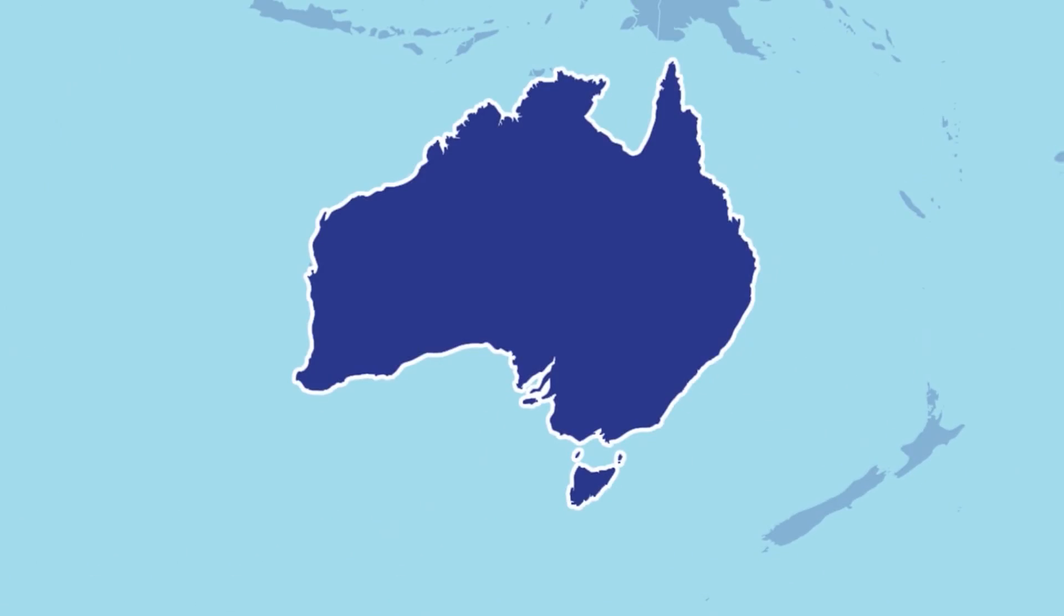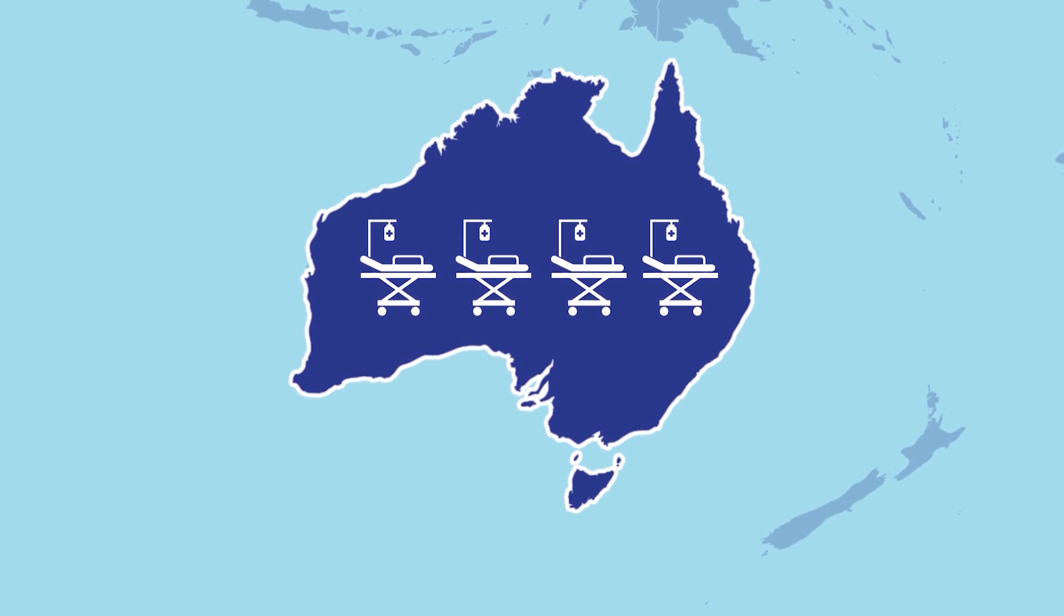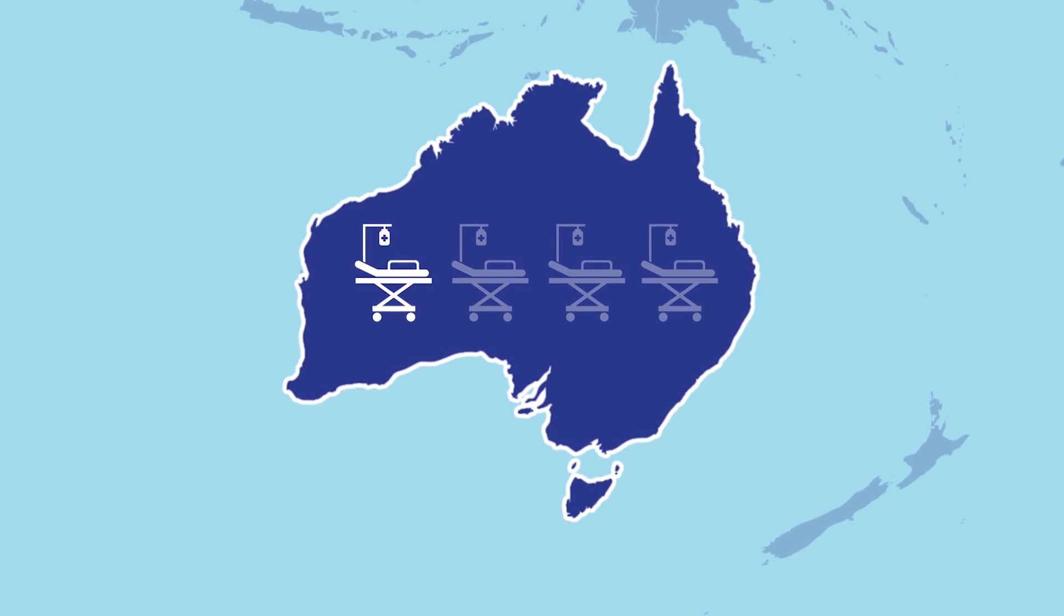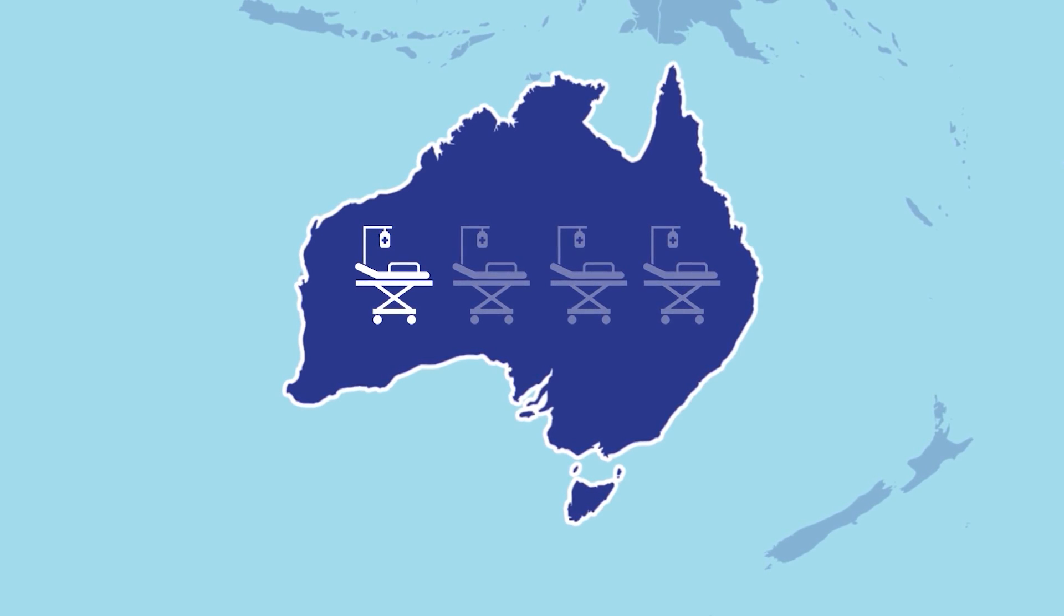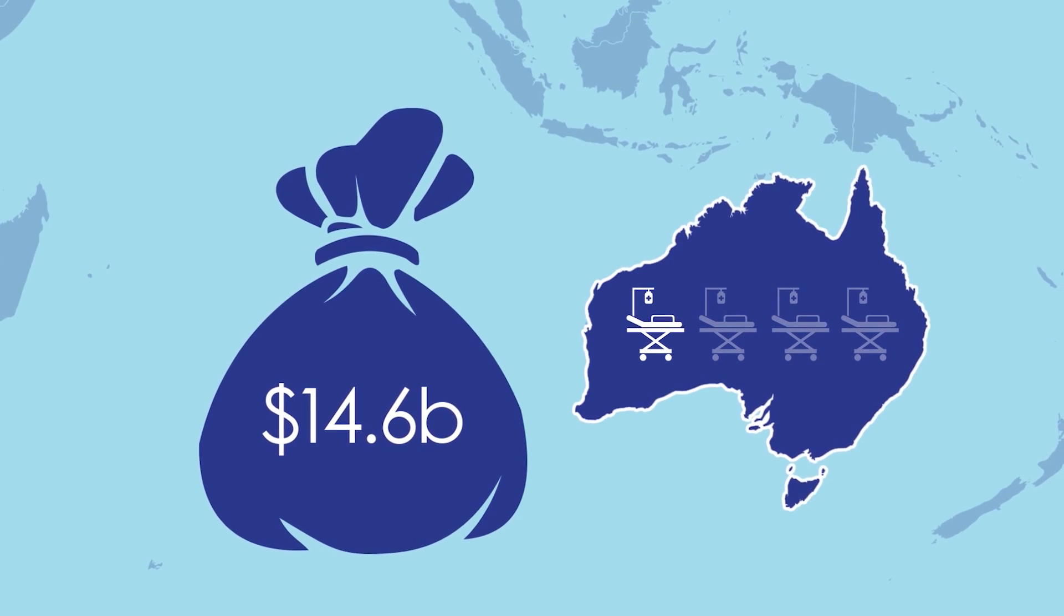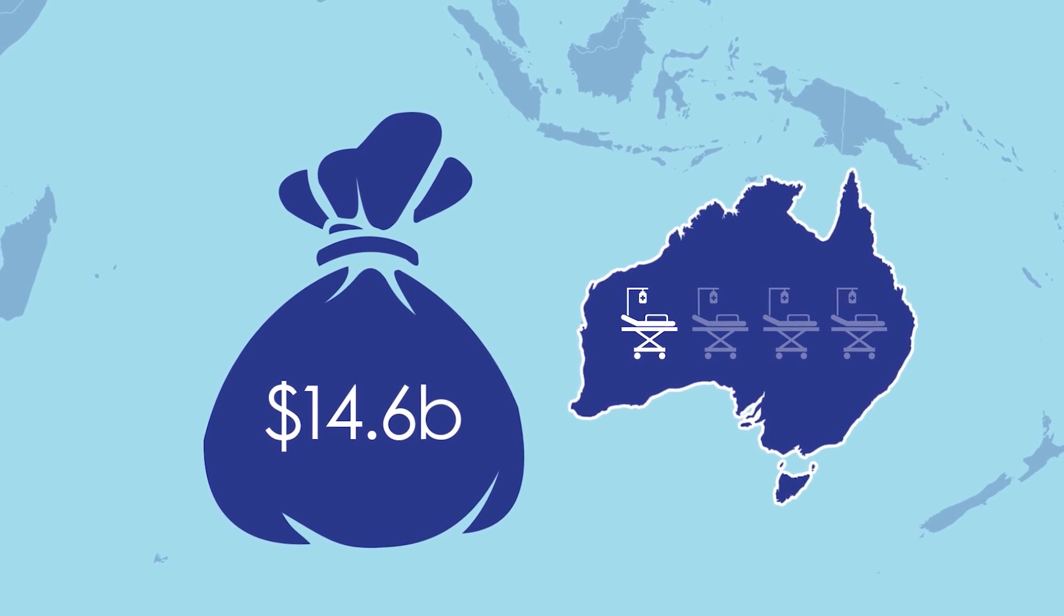In Australia, about 1 in 4 of every hospital bed is occupied by someone who's either got diabetes, or a diabetes-related complication. The total cost to the Australian community is about $14.6 billion a year. There is no cure.